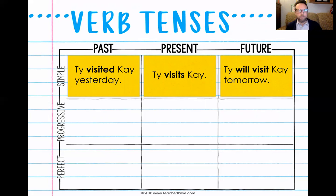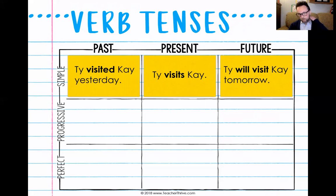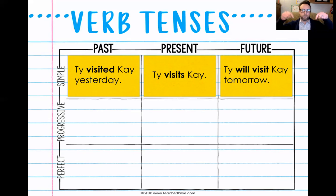For this first video, all I want you to do is go into your sketch notes and fill out for each one: when is it happening, and a sample sentence. Simple past: occurring before. Simple present: occurs now. Simple future: occurs in the future.